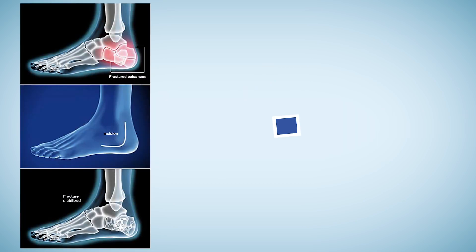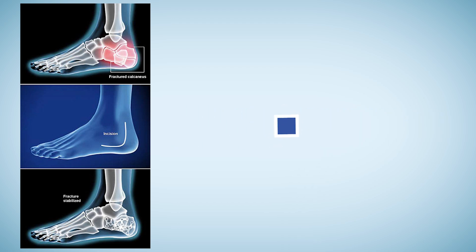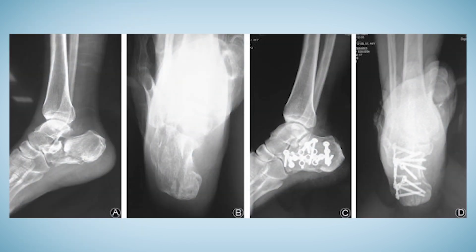This diagram shows where the calcaneal fracture happens in general, where the incision is made and where the plate gets fixed. Here is an x-ray of calcaneus locking plate fixed in the fracture site.